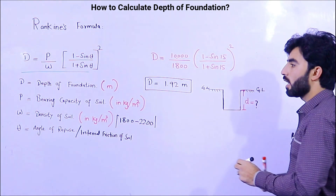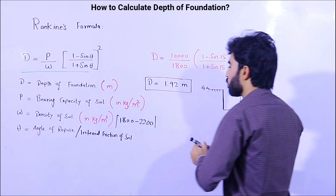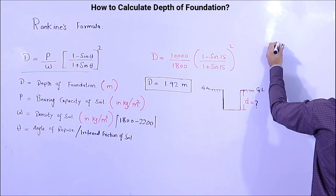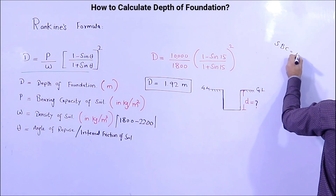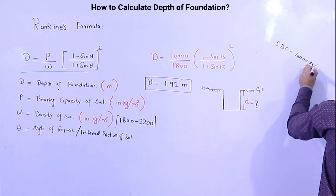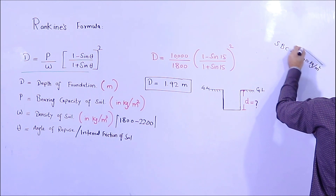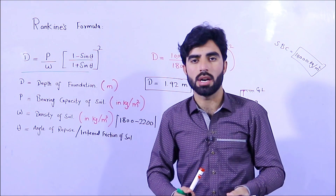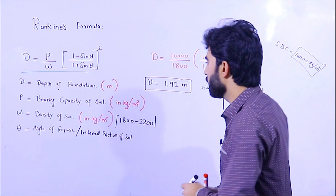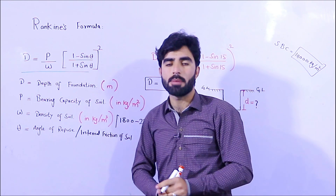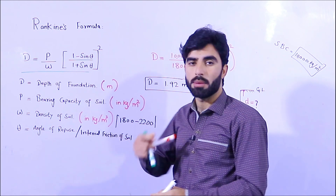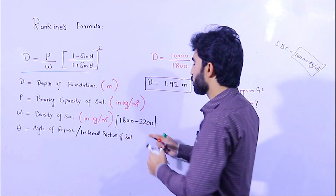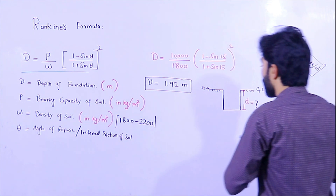For example, I am using normal soil with a soil bearing capacity (SBC) of about 10,000 kg per meter square. If you don't know the bearing capacity of different soil types, you can check online — I have already made a video on different types of soil and their bearing capacities, linked in the description. The density of soil, as I said, ranges from 1800 to 2200 kg per meter cube.